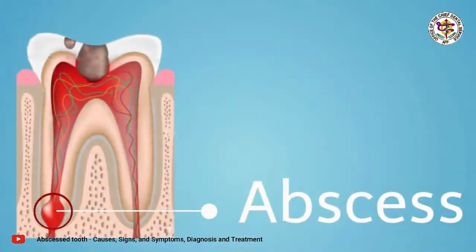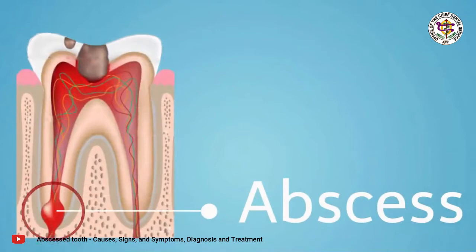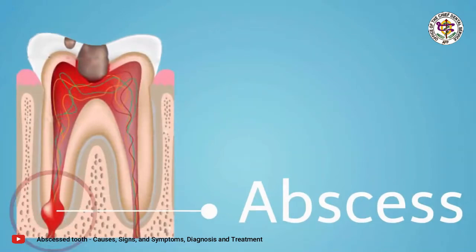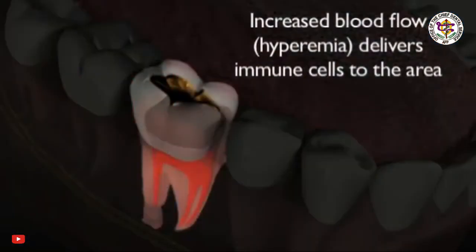Germs travel inside the tooth root and start an infection called an abscess. Pus forms at the end of the root inside the bone. As the pus increases, it causes great pressure, thereby causing severe pain.